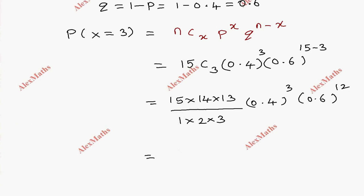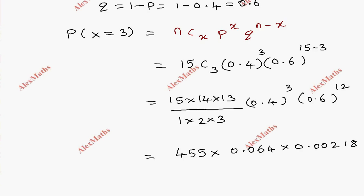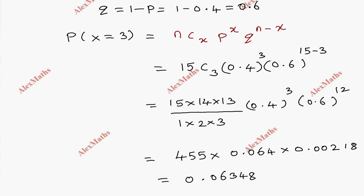Computing this value: 15C3 = (15 × 14 × 13) / (1 × 2 × 3) = 455. Then 455 × 0.064 × (0.6)^12 ≈ 455 × 0.064 × 0.0021, which rounds to 0.06348.